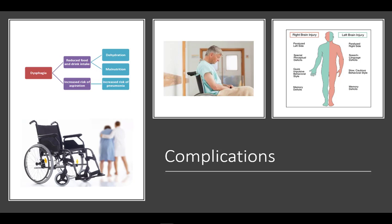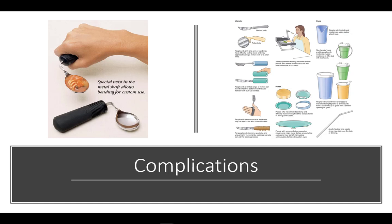Stroke can cause temporary or permanent complications and is the leading cause of disability in the U.S. In the presence of paralysis, the individual is more likely to experience pneumonia, urinary infections, pressure sores, pulmonary embolism, blood clots, and constipation due to inactivity. Eating is also affected through loss of mobility to shop and prepare meals, as well as the ability to feed oneself. Adaptive equipment, as shown in the pictures, can be used to provide some independence and improve oral intake.